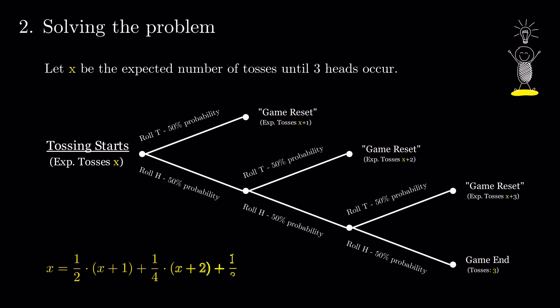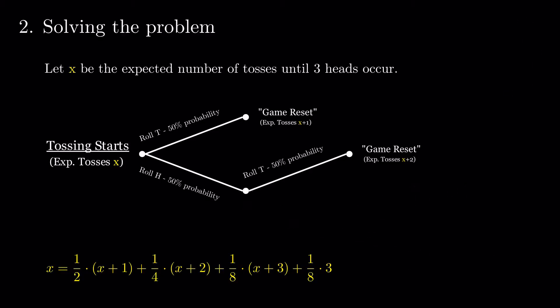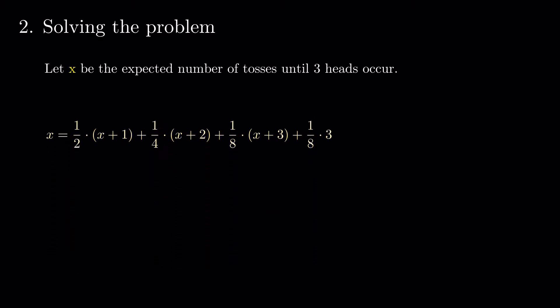Let's formalize this. We have our equation in x and, after solving this, we get that the expected number of tosses is 14.